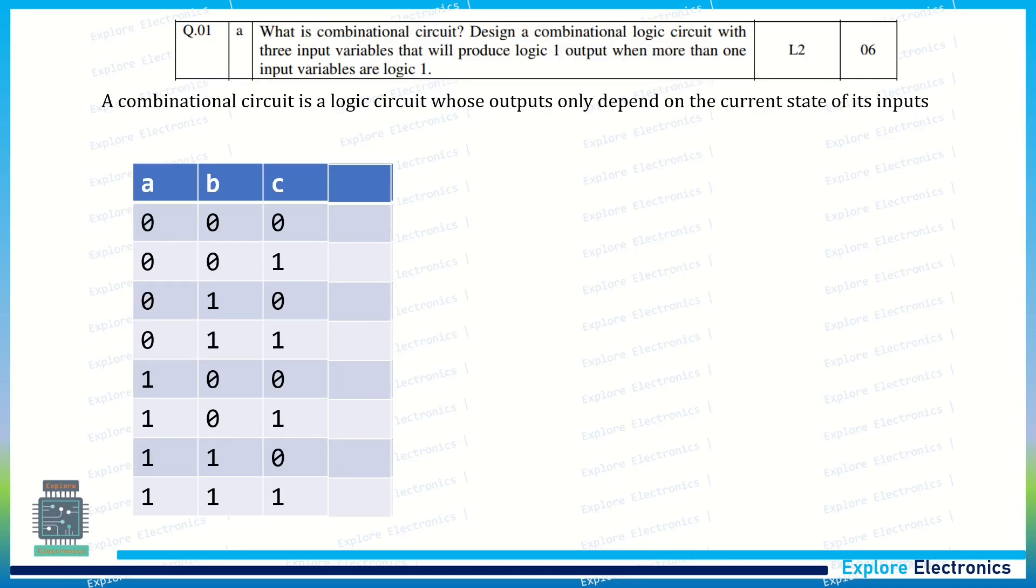With respect to the design of the combinational circuit given here, we need to take three variables. I have taken A, B, C as the three variables. The different combinations of ABC I have written here: 000 to 111 are the different combinations for ABC.